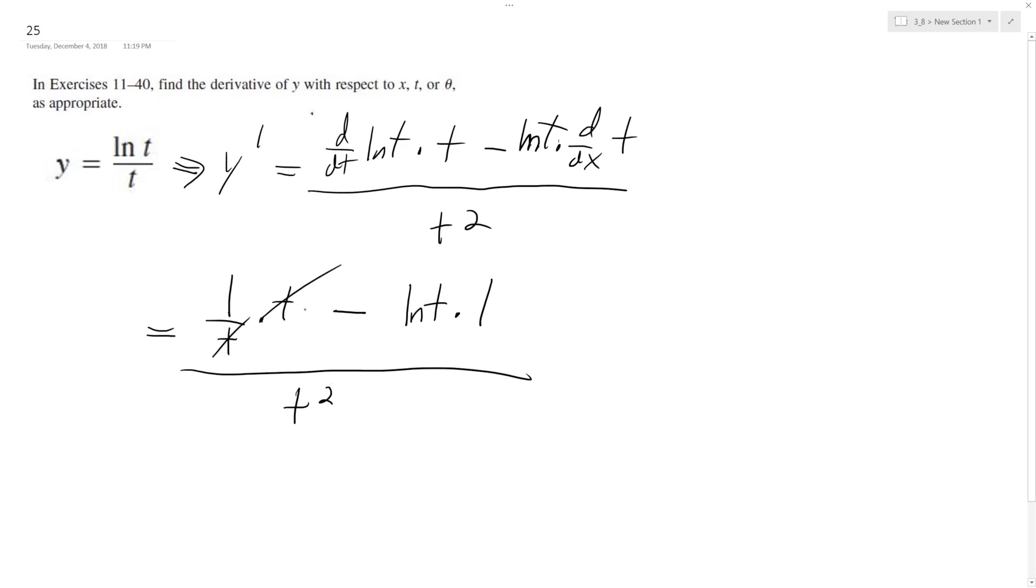So these t's cancel off. We're just left with 1. Natural log of t times 1 is natural log, and then we just have t squared on the bottom. So ultimately,